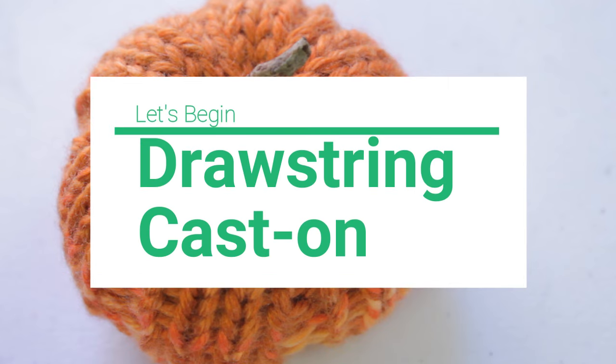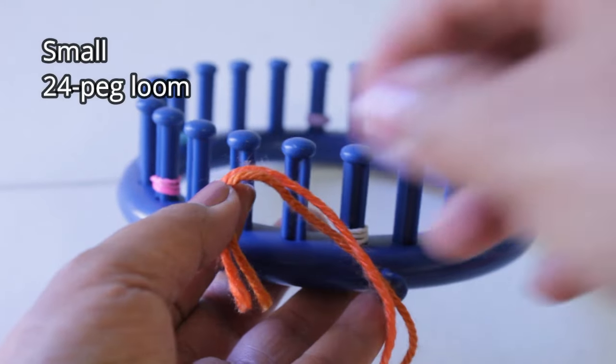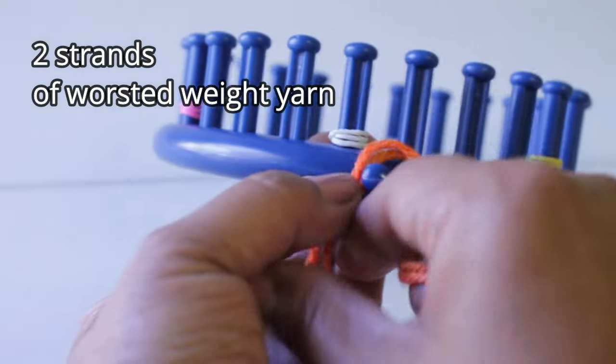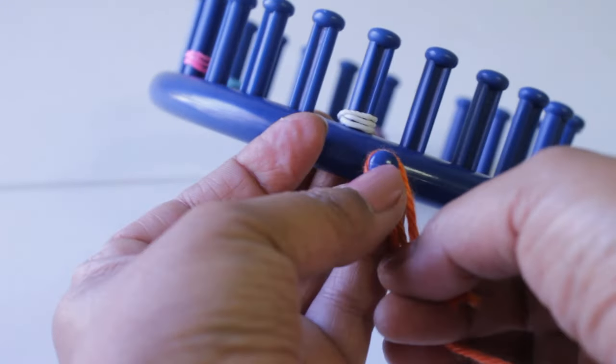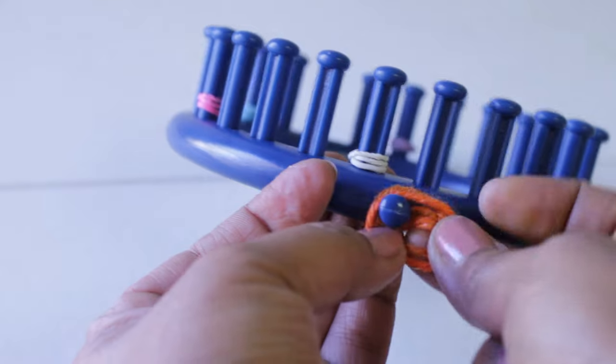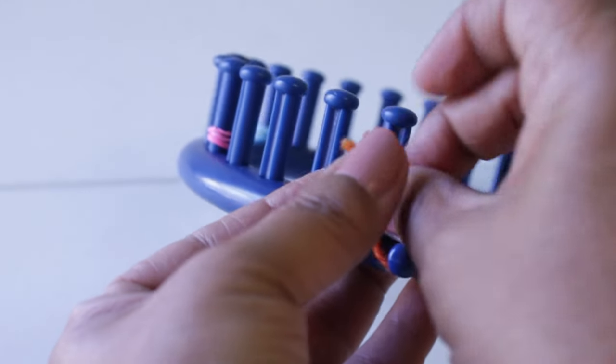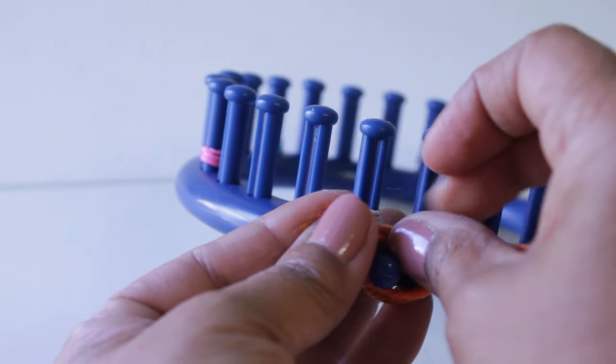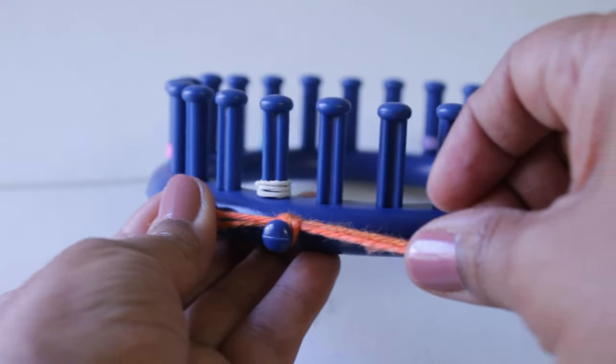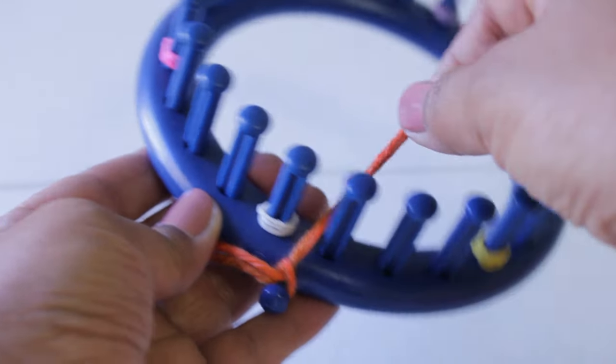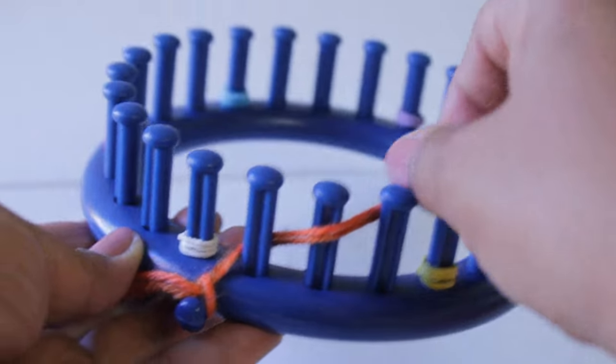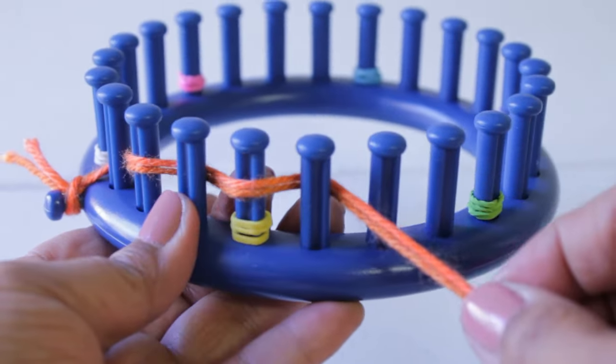Alright, let's begin with the drawstring cast on. I'm using a 24 peg loom and two strands of worsted weight yarn. I'm gonna secure that yarn to the anchor peg with a basic knot. You can do a slip knot if you're more comfortable. Then take the working yarn between the first and last peg and we're going to zig-zag with that working yarn through every other peg until we've gone through the whole loom.